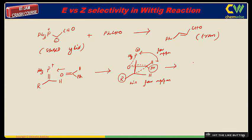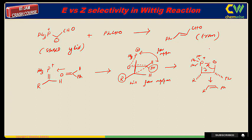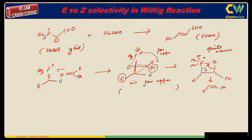Then what happens is they orient themselves such that the Ph group and the R group are distanced from each other. What we find is that the R group, the Ph group on the ylide, and the Ph groups on phosphorus are on the same side. This forms a four-membered oxaphosphetane ring with R and Ph on the same side — this ring is quite unstable. Because of this alignment to maintain distance between R and Ph, they lock in this conformation.